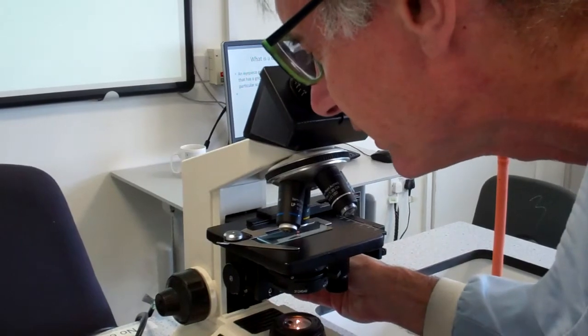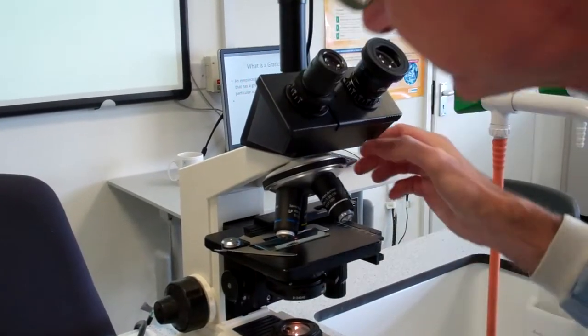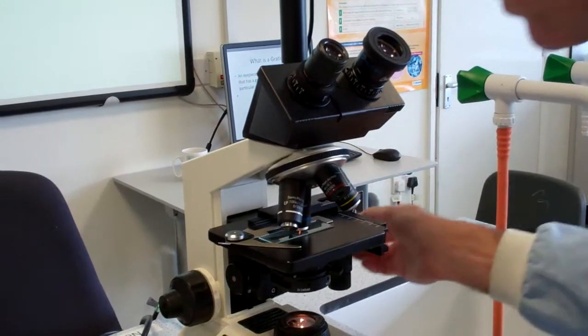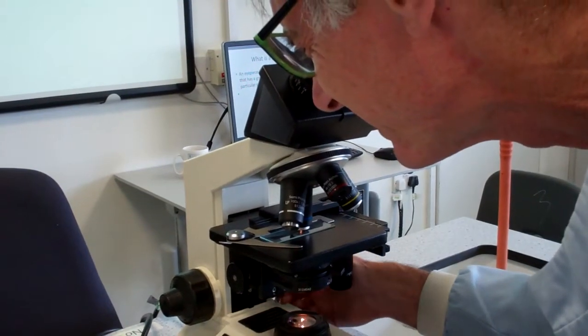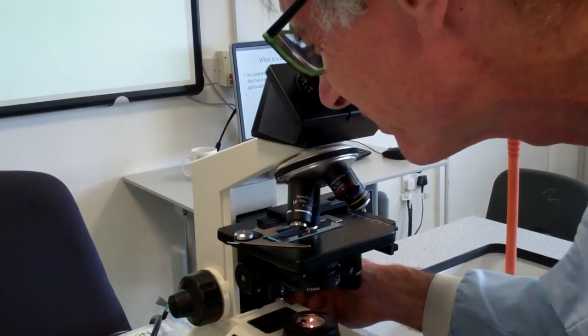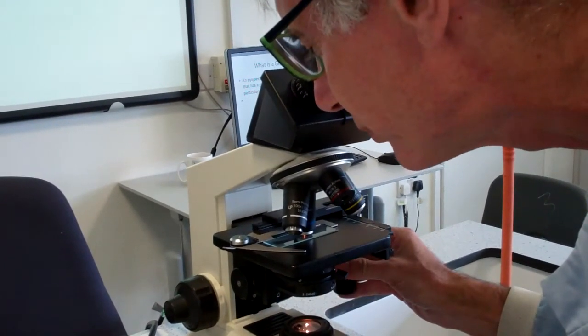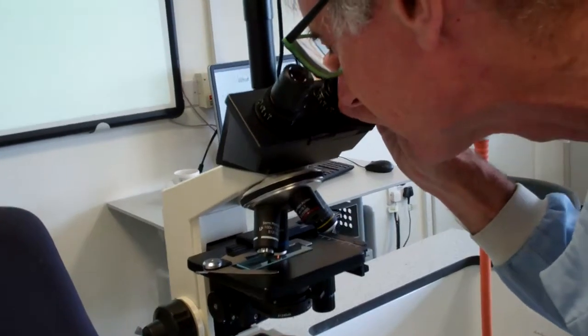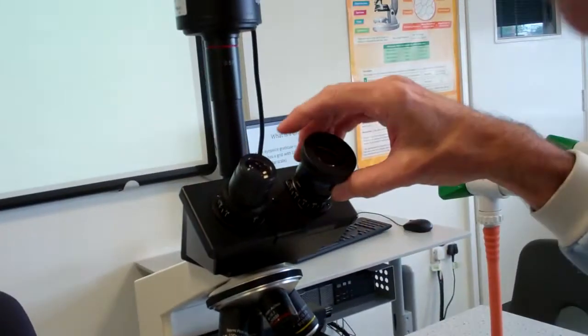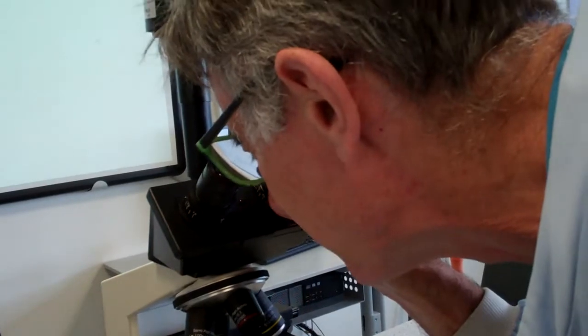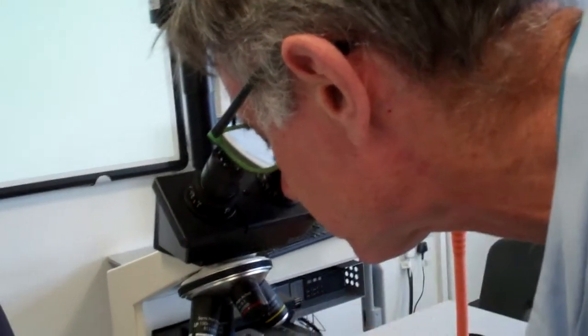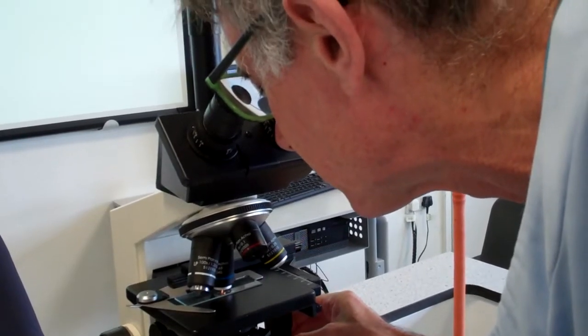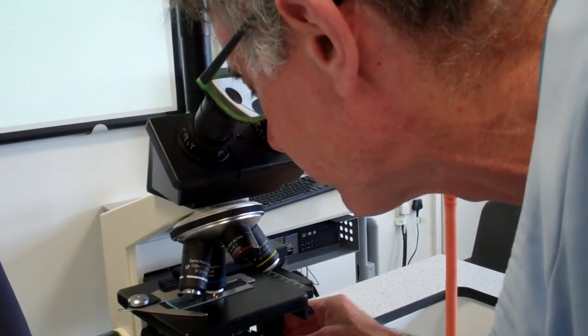We're going to calibrate it first using 400 times magnification with the blue lens. Move what you see here to the middle, and now look through this lens. The handy thing about this is it rotates, and you line up your eyepiece graticule with the stage micrometer.